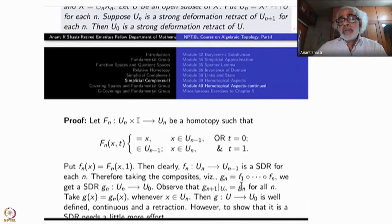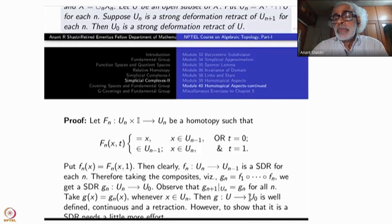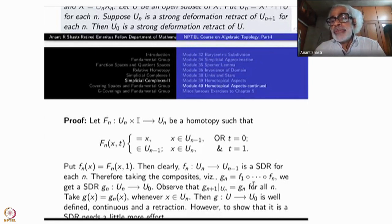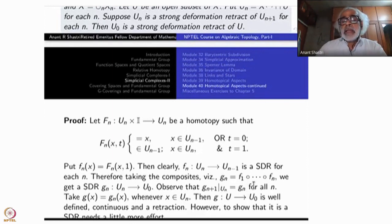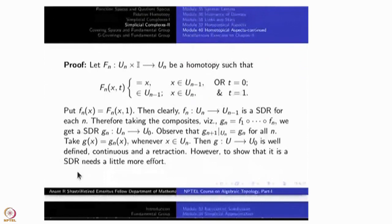The only problem here is: where is the homotopy? What is the meaning of concatenating infinitely many homotopies? When you take one homotopy here and another homotopy there, the composition of homotopies is not composition of functions — it is concatenation of homotopies. That is why this requires more careful attention. Showing that it is a strong deformation retract needs a little more effort.